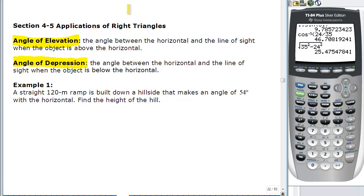Angle of elevation is the angle between the horizontal and the line of sight when the object is above the horizontal. Angle of depression is the same thing when the object is below the horizontal. So elevation is up or above, depression is down or below. We're always talking about an angle made with the horizontal, either going up or coming down.